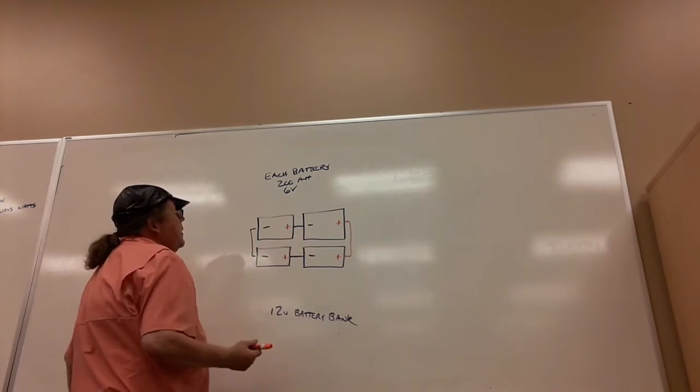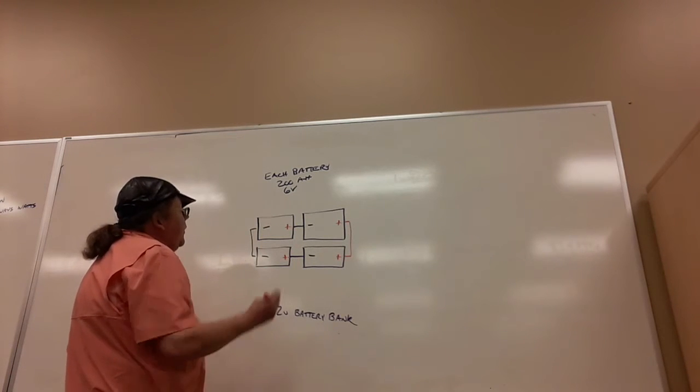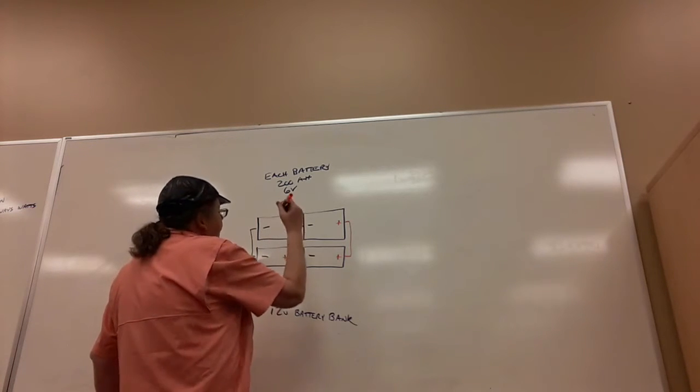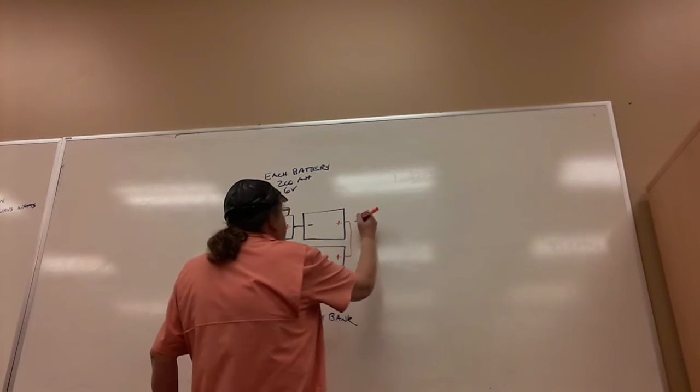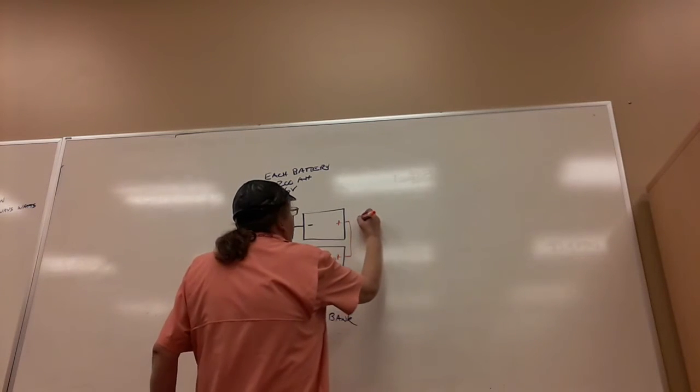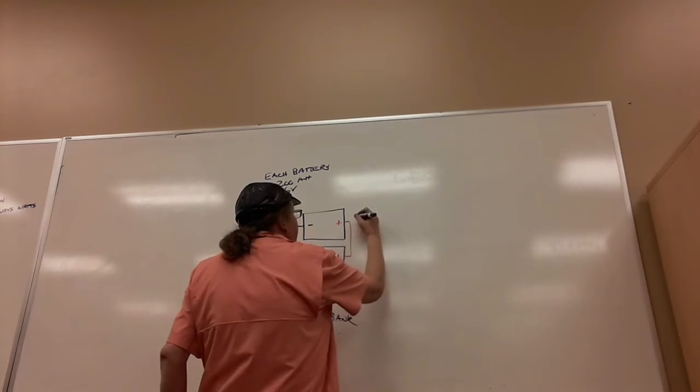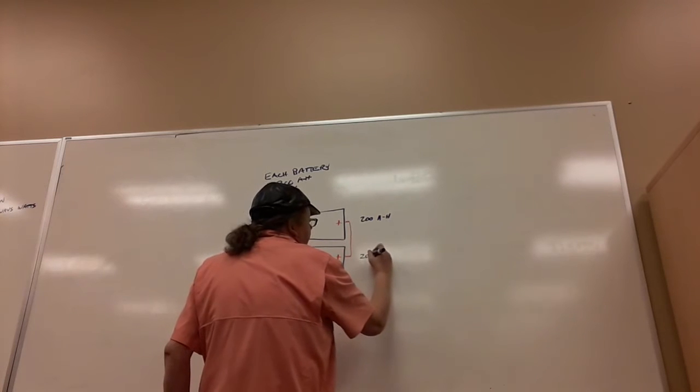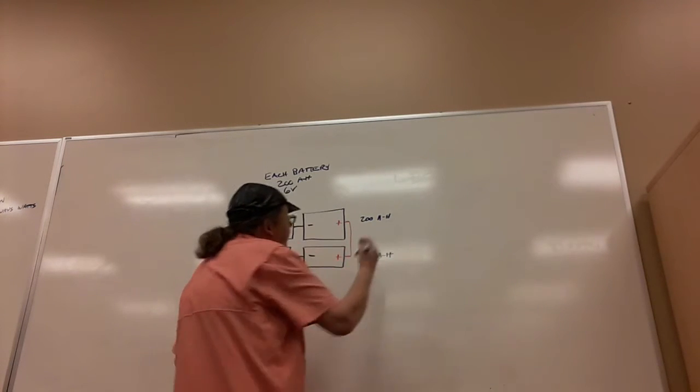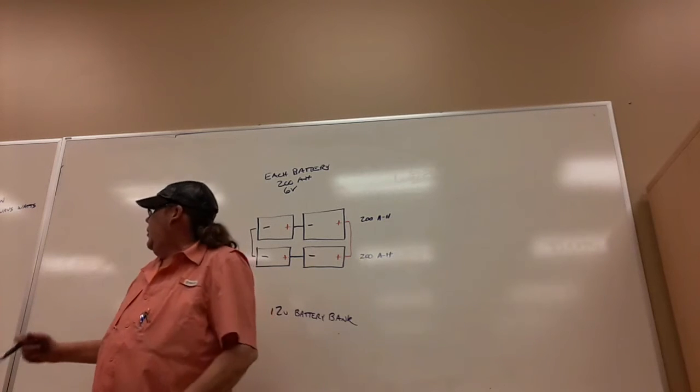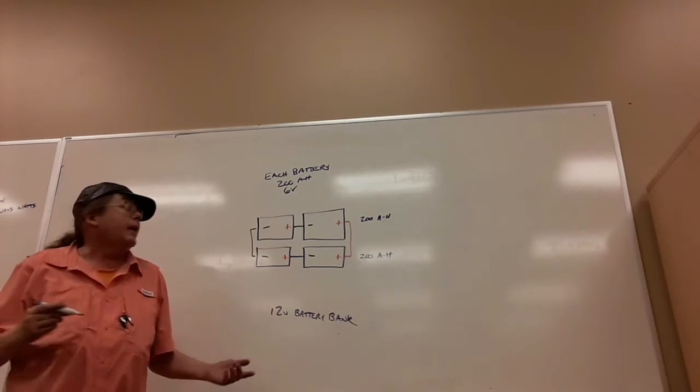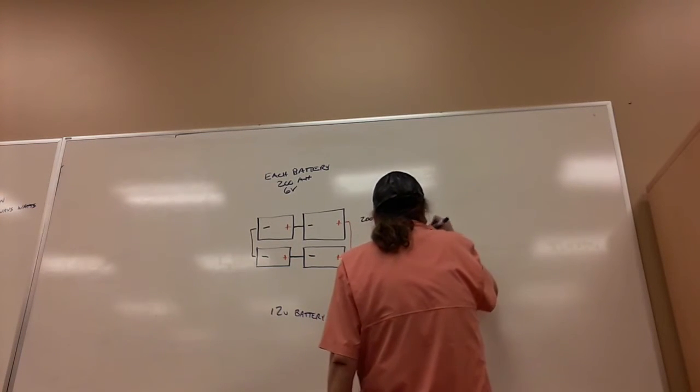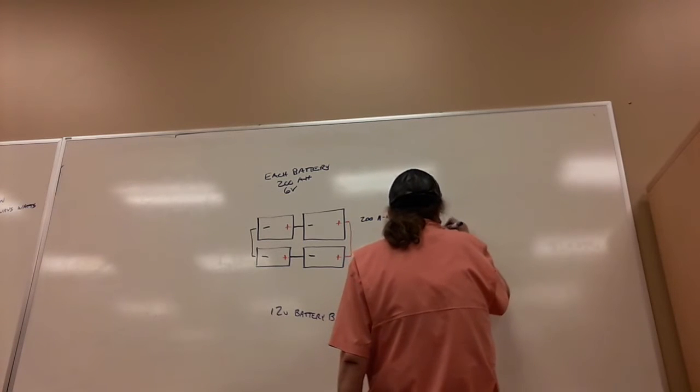Two series strings put in parallel. So that means at the end of each string, he has 200 amp hours right there and 200 amp hours right there. Add those two together because we're in parallel, and amps add up, volts stay the same. So he has 400 amp hours at 12 volts.